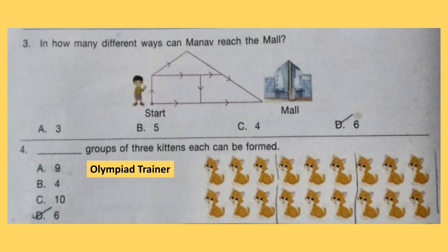Question 3. In how many different ways can Manav reach the mall? The correct answer is option C.